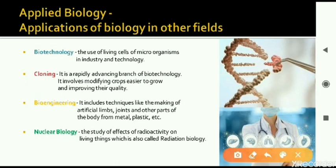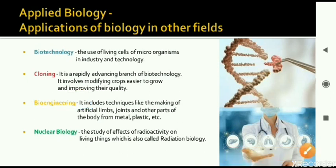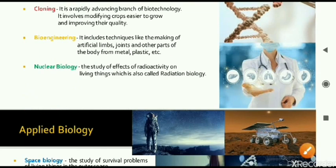We can create an artificial variety of crop by the use of biotechnology. Next is bioengineering — bioengineering means making of artificial limbs, joints, and parts of the body. It can even be internal organs; artificial lungs, artificial heart and liver are also available. These are all under the subject of bioengineering. Next is nuclear biology, also called radiation biology, where we study the effect of radioactivity on living things — certain radioactive substances emit radiation and may cause cancer, and their ill effects on living beings are studied in nuclear biology.